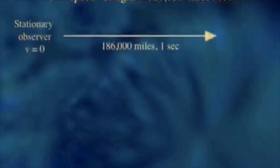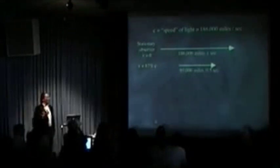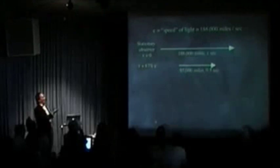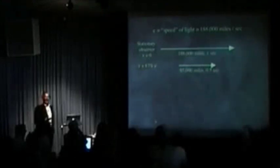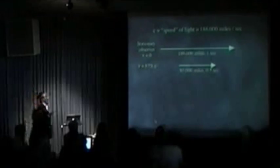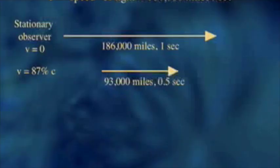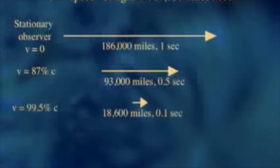So, if a stationary observer observes a ray of light going by and it goes 186,000 miles in one second, somebody moving at 87% the speed of light would see half that amount of distance and half that amount of time. But the speed would still be the same. 93,000 miles in half a second is 186,000 miles a second. Someone moving at 99.5% the speed of light sees a tenth of that. 18,000 miles in a tenth of a second. Still the same speed.